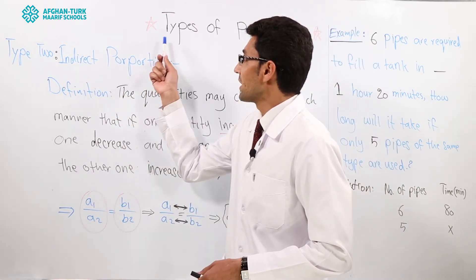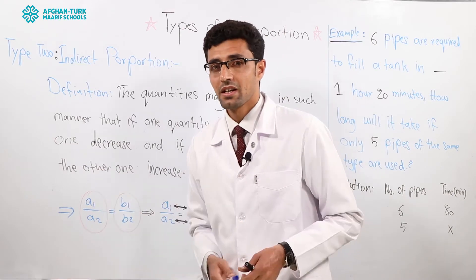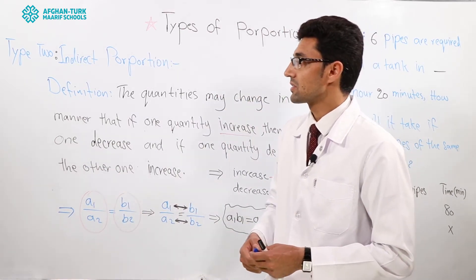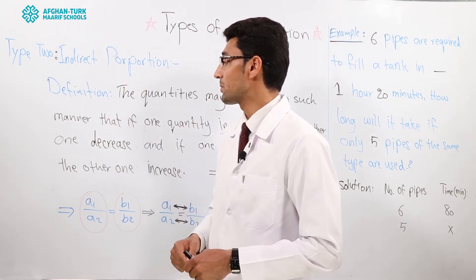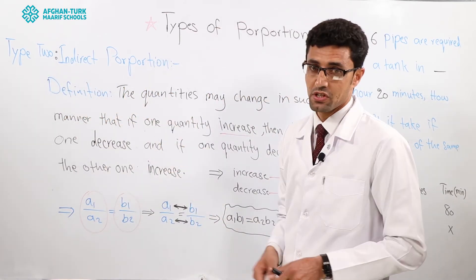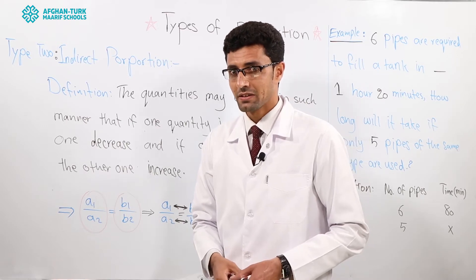We are going to study types of proportion. In the previous section we studied type 1, direct proportion, but now we are going to study type 2, indirect proportion. Let's learn it.